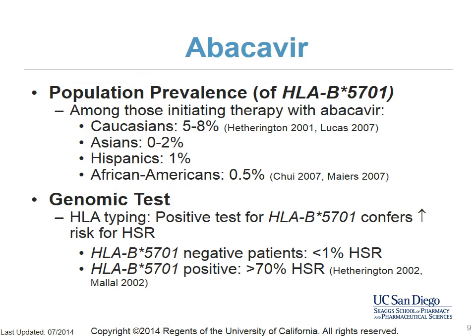The prevalence of HLA-B*5701 is highest among Caucasians at five to eight percent. Among Asians, the risk is zero to two percent, with Indians at the high end and Chinese and Japanese having lower risk. About one percent of Hispanics and 0.5 percent of African Americans carry the allele. Studies have demonstrated that fewer than one percent of HLA-B*5701 negative patients develop HSR in response to abacavir, while more than 70 percent of HLA-B*5701 positive patients will develop the reaction.